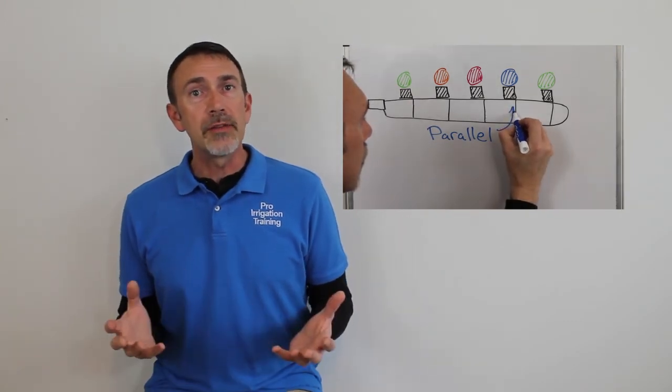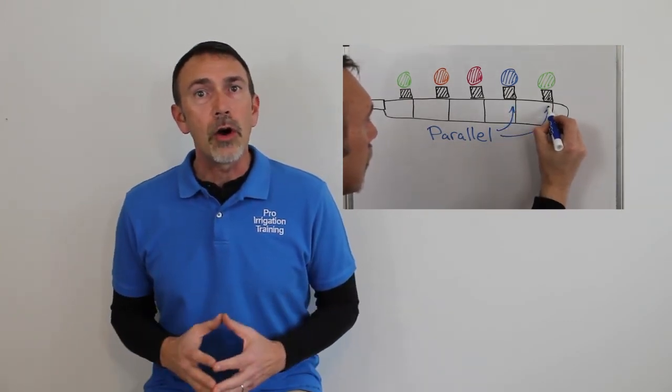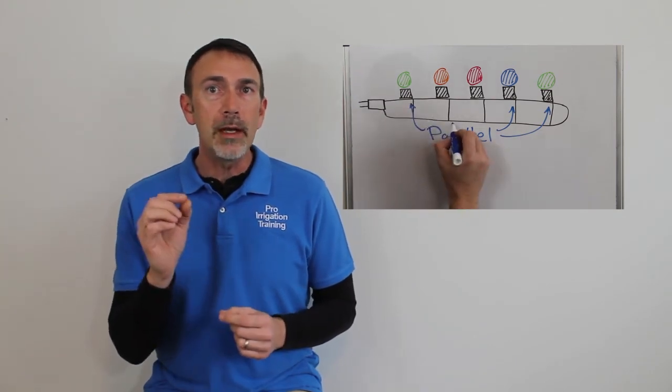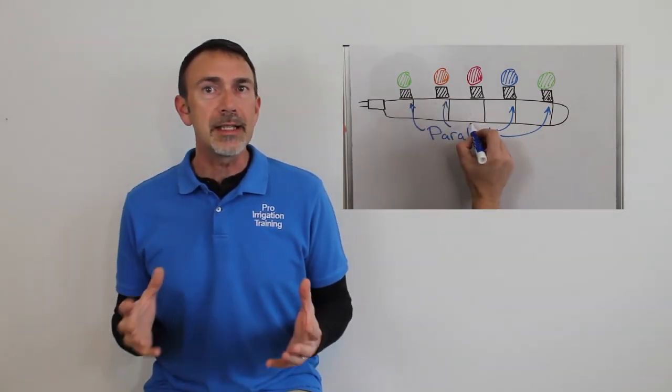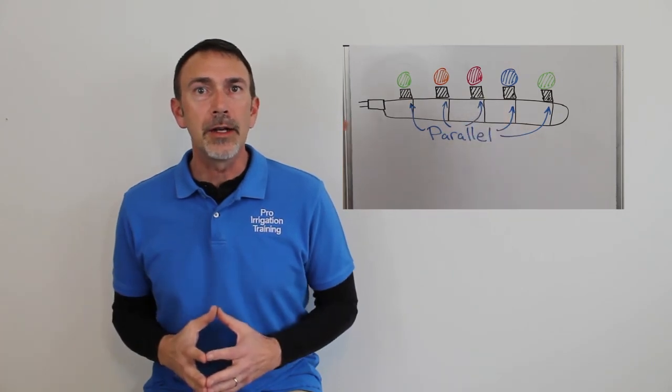Now, the strings of lights that you get these days are all in parallel, and so if one bulb goes out, then the entire string isn't inoperable.